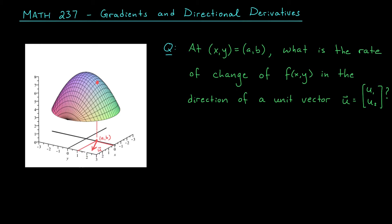To remind you of the content of this section, I'd like you to think back to our lessons on partial derivatives. Back in week 3, we learned how to measure the instantaneous rate of change of our function as we move from a given point in the direction of the positive x-axis, or in the direction of the positive y-axis. The rate of change in the positive x-direction is the slope of the tangent line — the partial derivative of f with respect to x. Likewise, the rate of change in the positive y-direction is the partial derivative of f with respect to y. For the discussion to come, it will be helpful to think about our movements here in terms of vectors. The slope of this tangent line is the rate of change as we move in the direction of the vector (1,0), whereas the slope of this tangent line is the rate of change as we move in the direction of (0,1).